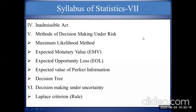After this we will see what is an inadmissible act. Basically there are two types of acts: one is permissible and another is inadmissible. A permissible act is also known as an admissible act. We will see the meaning of inadmissible act, and this is very important for your syllabus. There are basically three types of methods, out of which we have to learn two methods.